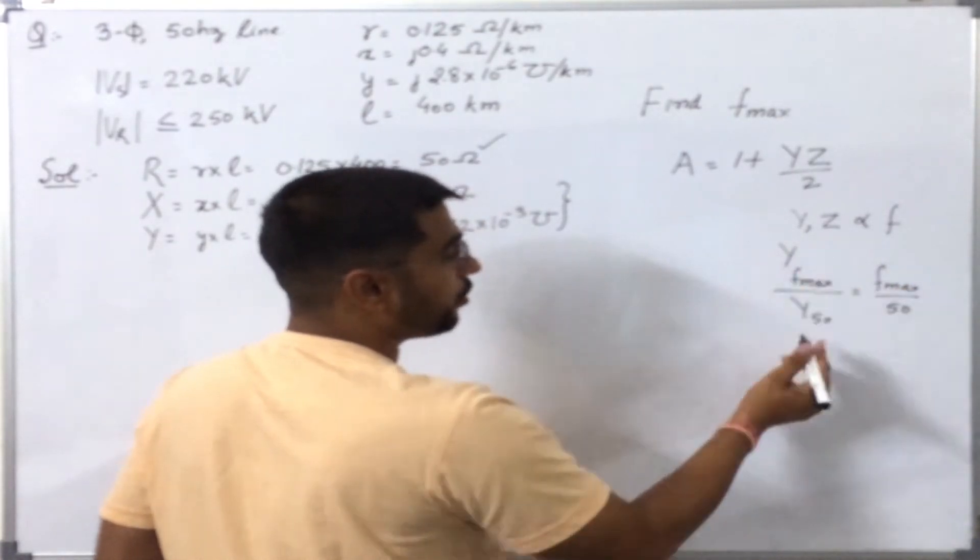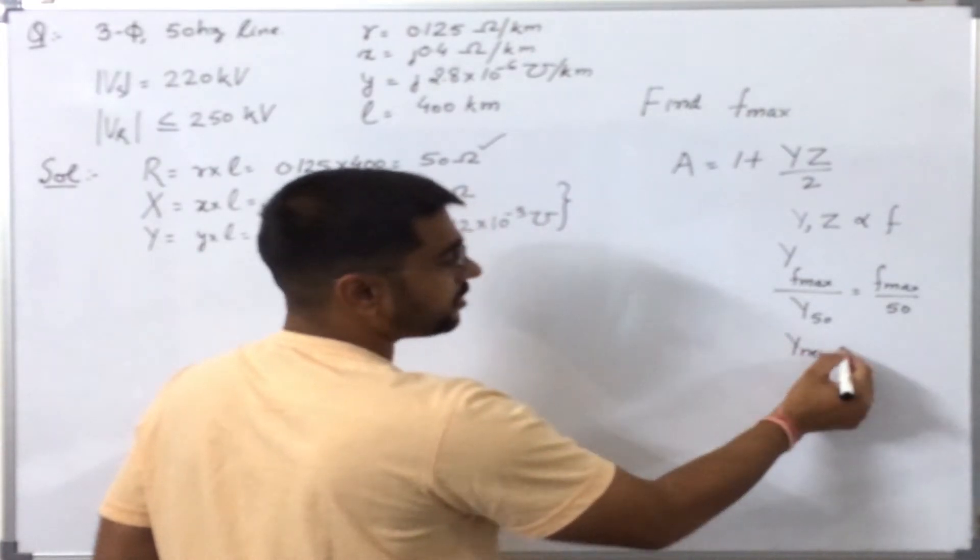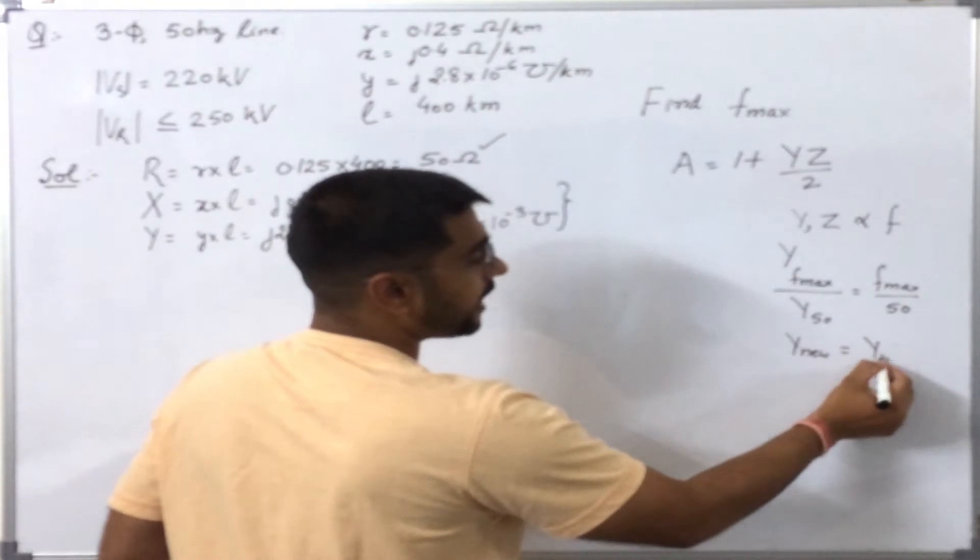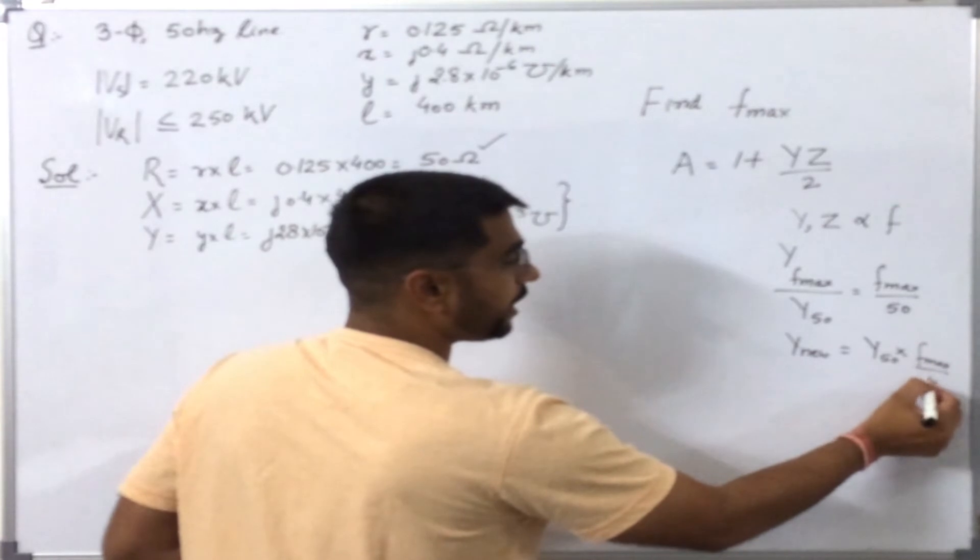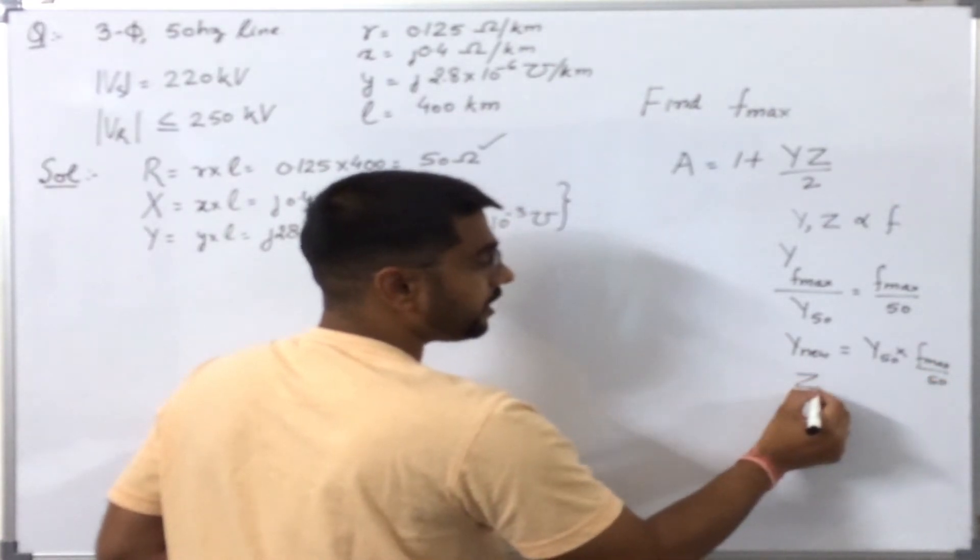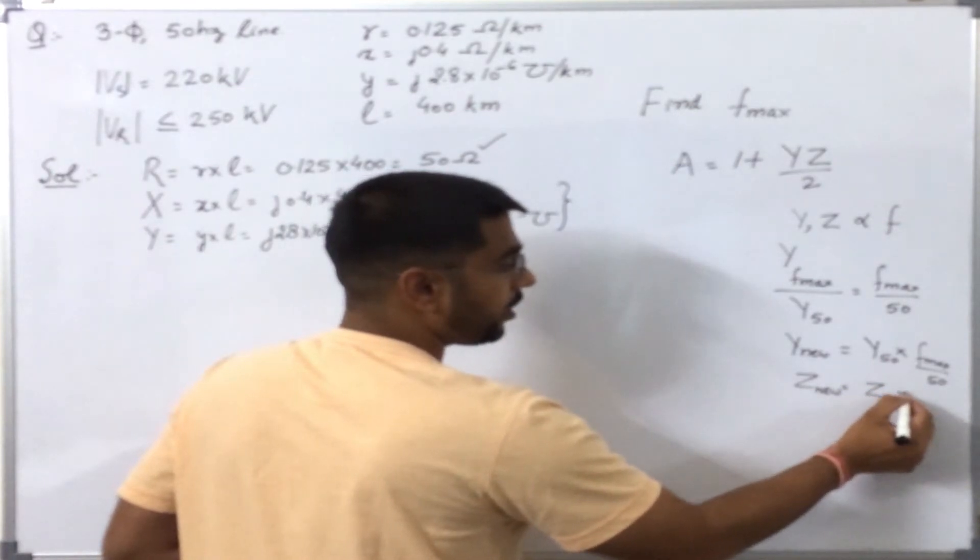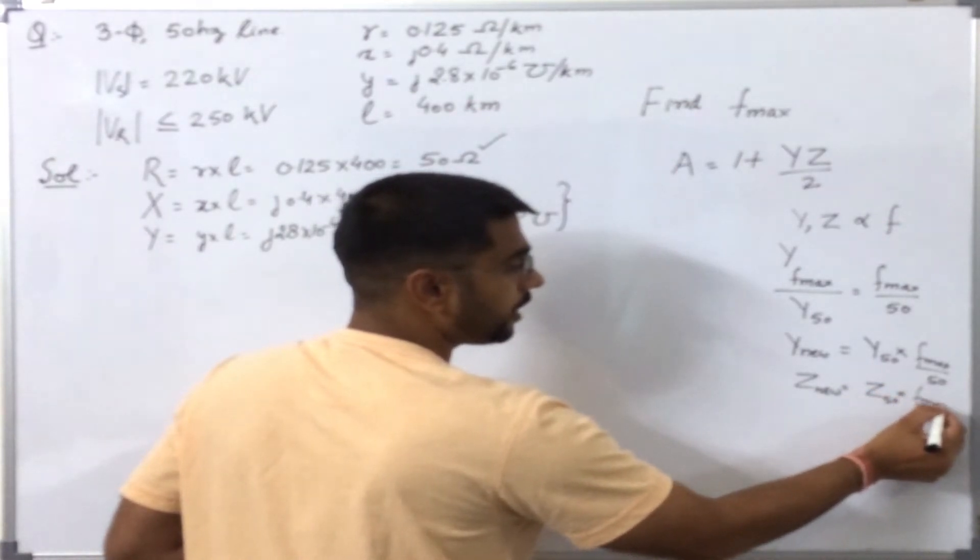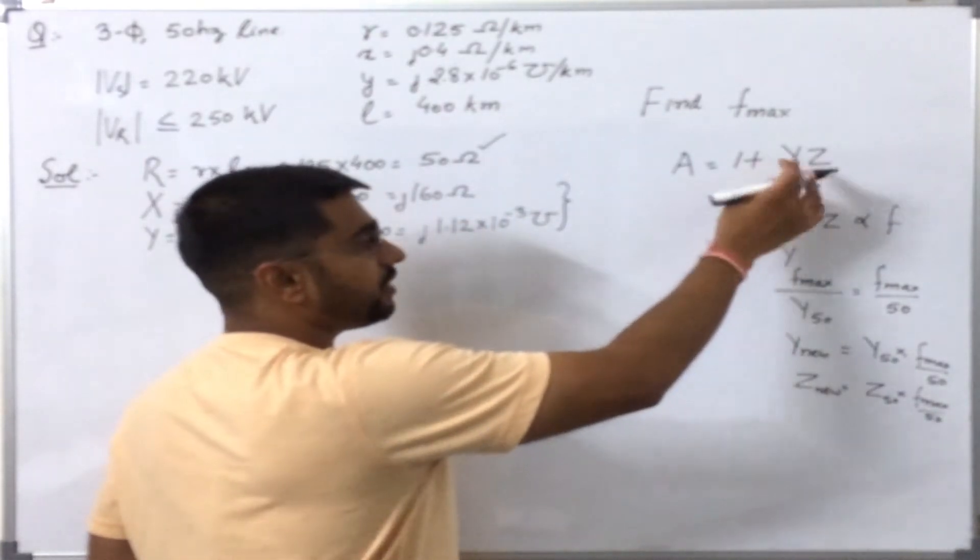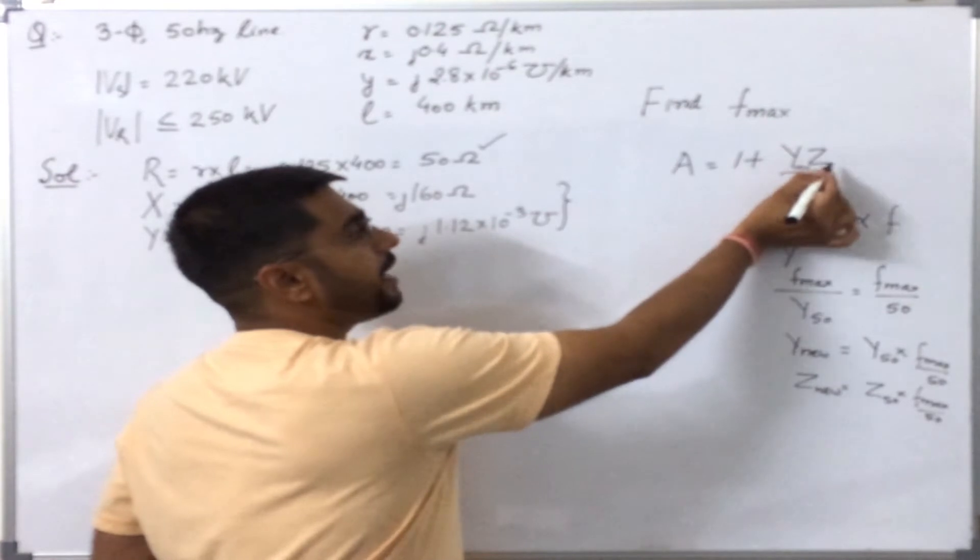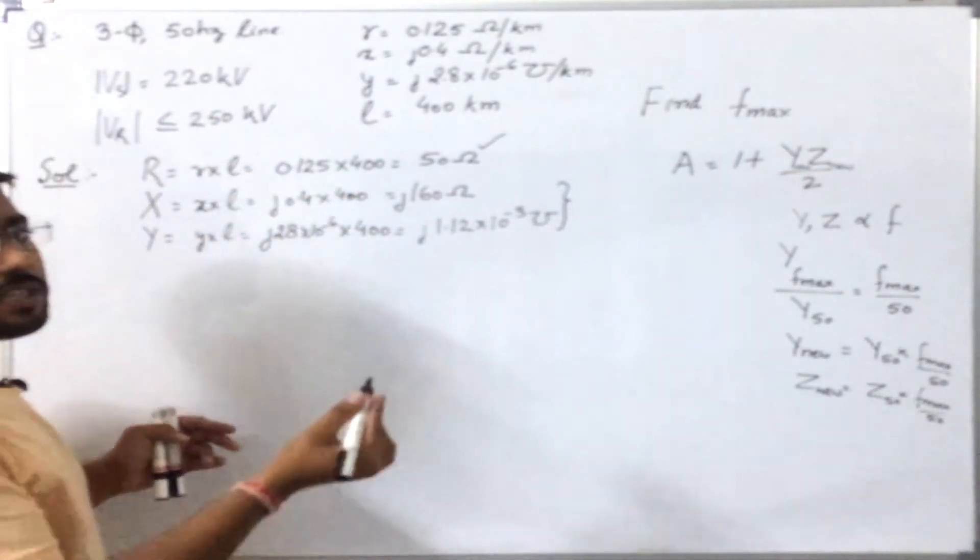Let me write this as Y_new only. So Y_new or Y at f_max equals Y at 50 hertz times f_max over 50. Similarly, Z_new can be written as Z at 50 times f_max over 50. So instead of using Y or Z, we will use Y_new and Z_new in the formula.